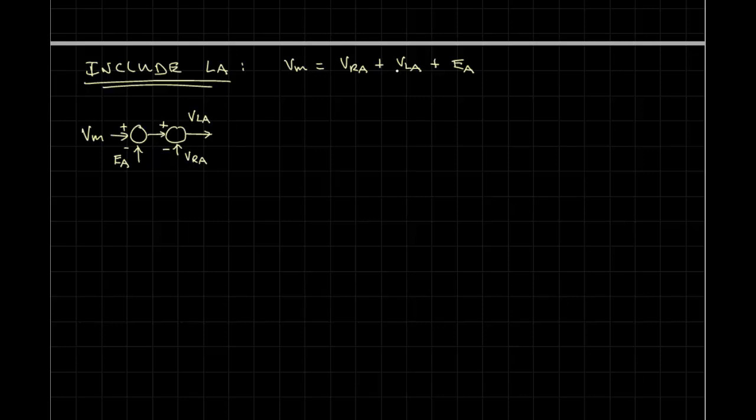This comes from V-M is equal to V-R-A plus V-L-A plus E-A. So, if I solve for V-L-A, I have V-M minus V-R-A minus E-A. And I have chosen to write it, to split it between two summing junctions, although it could have been written as one.